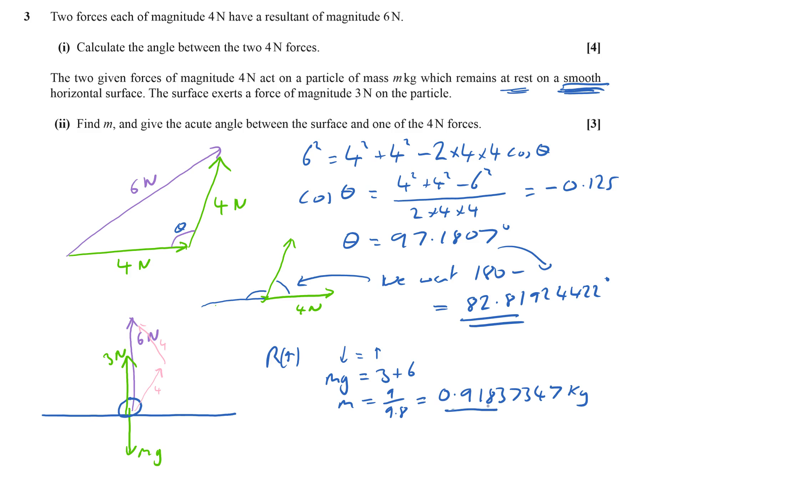And we also have to find the angle between the surface and one of the four newton forces. So I've got to find this angle here. But in order to do that, I'm going to find, I know this angle already. I know that angle is 97.18, and this is an isosceles triangle. So this angle here, in this bit here, that bit, is going to be, it's a triangle, it's an isosceles triangle, so I'm going to do 180, take away that 97.1807, and divide it by two.